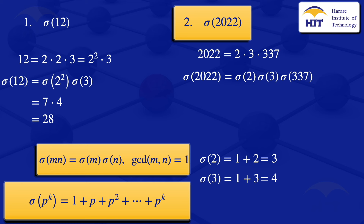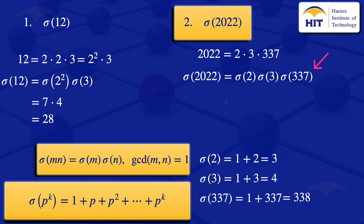For sigma(337): 337 is a prime number, so p = 337 and k = 1. The formula gives 1 + p, so sigma(337) = 1 + 337 = 338. Substituting all values, sigma(2022) = 3 × 4 × 338 = 4056. So the sum of divisors of 2022 is 4056.